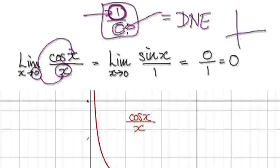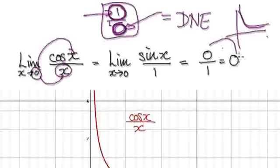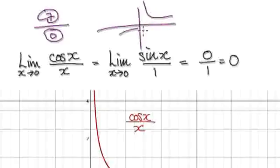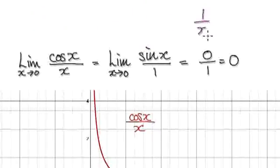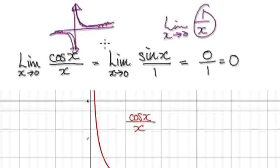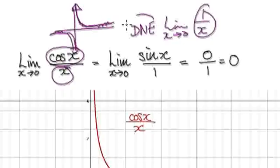If the numerator is a definite number and the denominator heads towards 0, you're going to get something that shoots up and shoots down. It's just like 1 over x — the limit as x tends to 0. From the positive side it shoots up, from the negative side it shoots down. So if you have a definite number on top and 0 on the bottom, the limit does not exist.